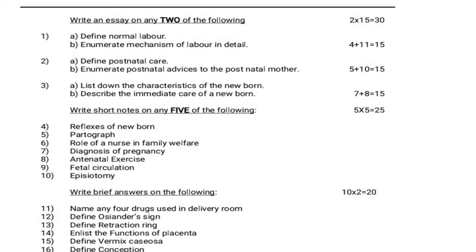2b — Enumerate postnatal advices to the postnatal mother, which is for 10 marks. 5 plus 10 is equal to 15 marks. Third question: 3a — List down the characteristics of the newborn, 7 marks. 3b — Describe the immediate care of a newborn, which is for 8 marks. 7 plus 8 is equal to 15 marks.